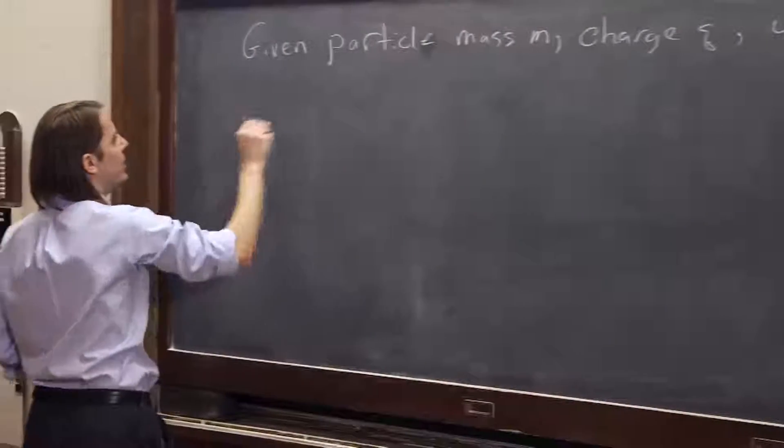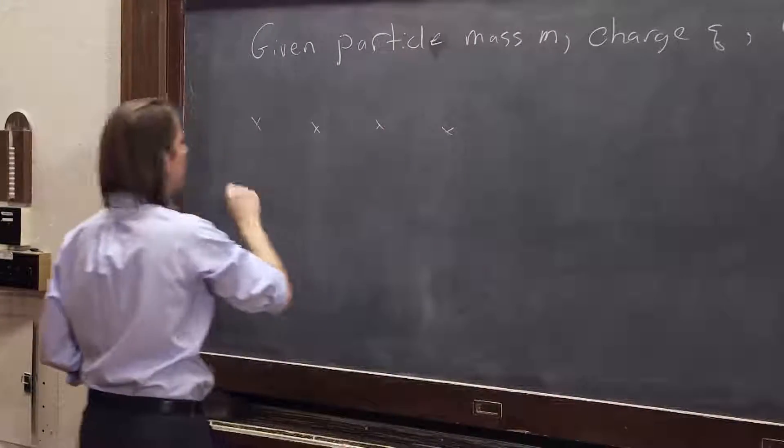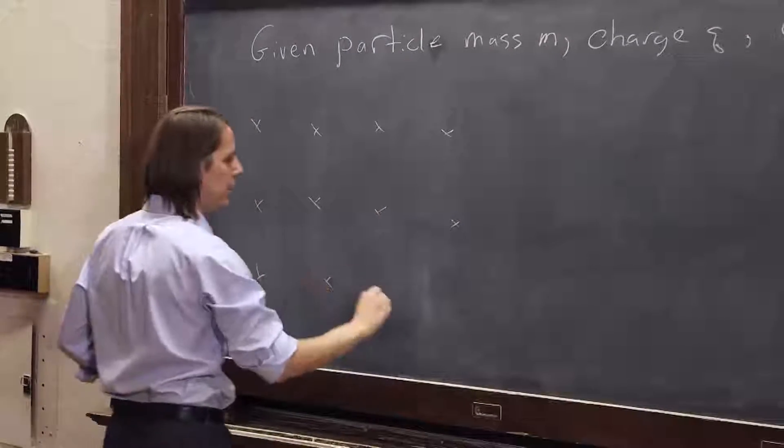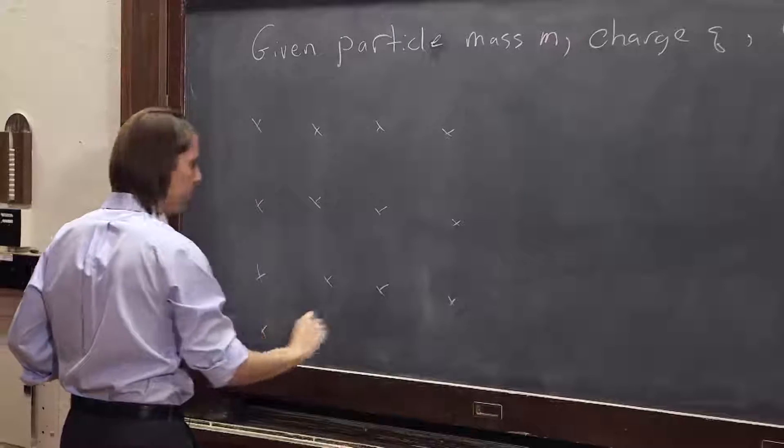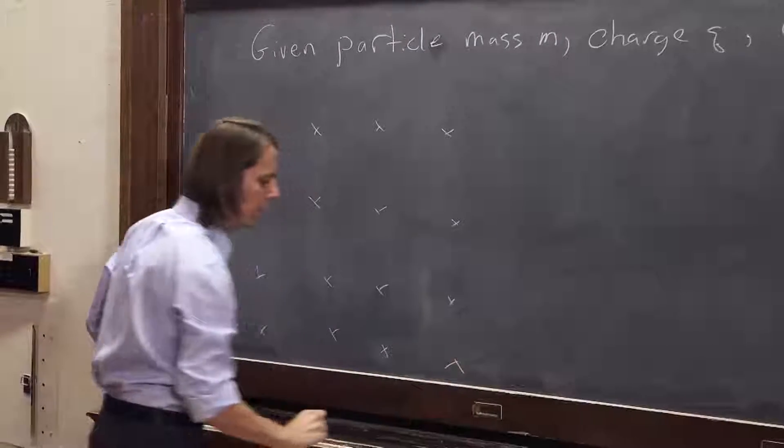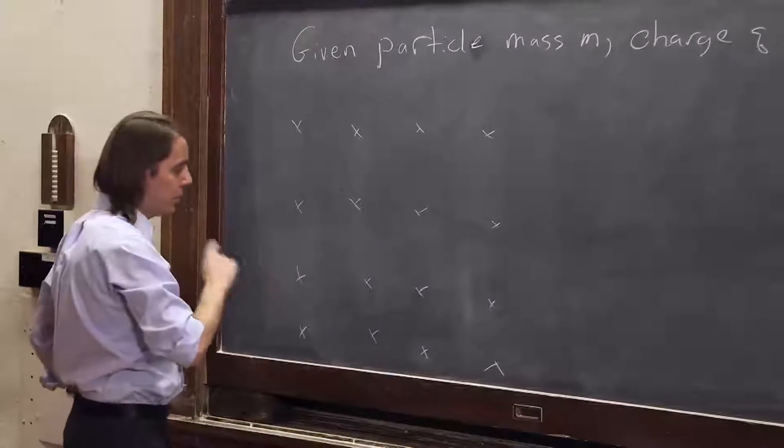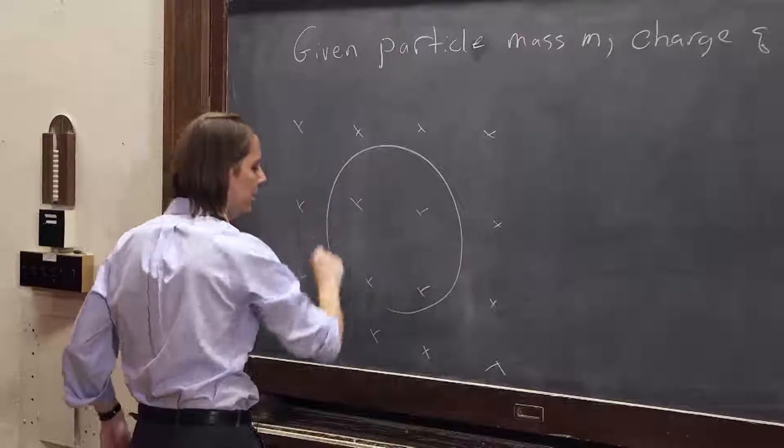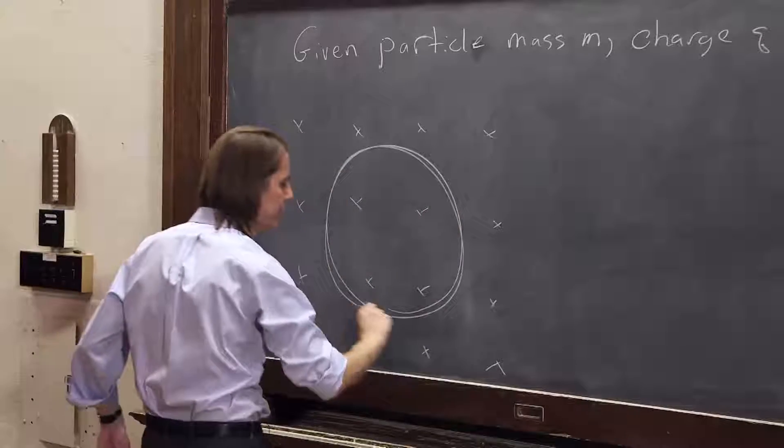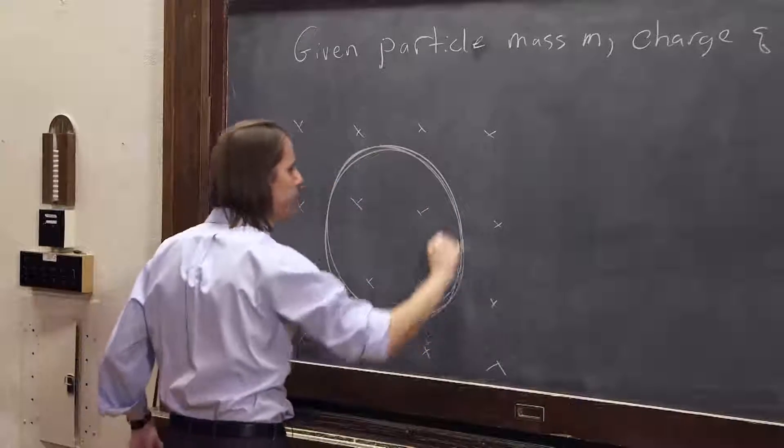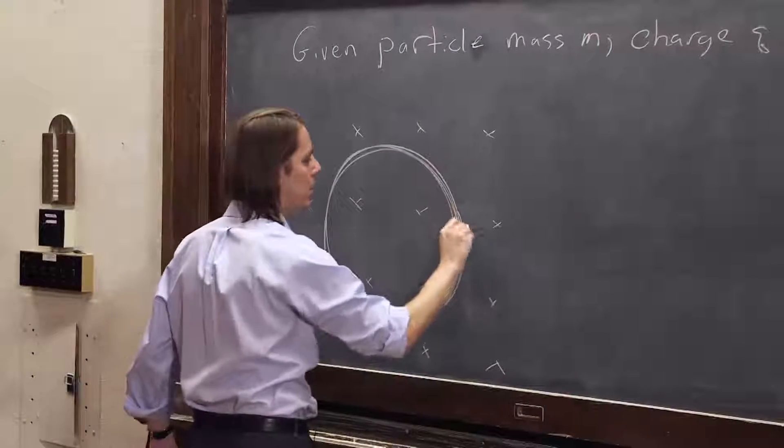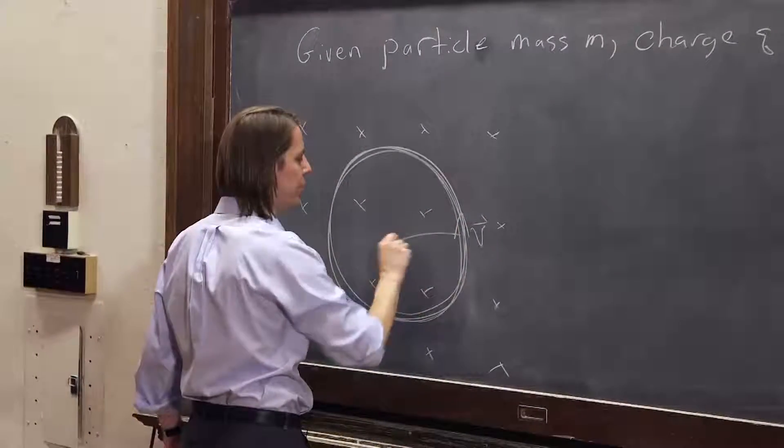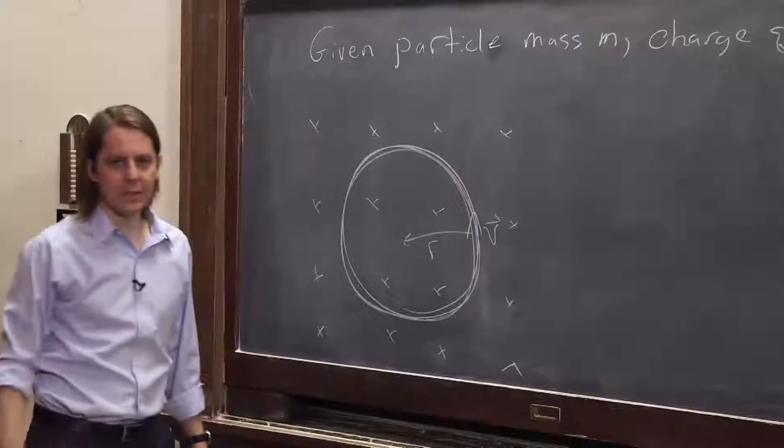So again, let's put it in a uniform B that looks like this. They're fun to draw. And we already agreed that the charge will go in a circle, because it will always feel a force at right angles to its velocity, so it's going to go around like that. Going around this way, feeling a force always seeking the center.